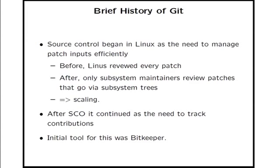Here's a brief history. Git is a fairly recent invention, and source control in Linux began effectively as the need to manage patches efficiently. If you look at the early releases of Linux from about 2.4.18 and before, it was basically Linus patching into his master kernel tree and releasing tarballs. Before that, Linus reviewed every patch that went into his master tarball, which meant that there was a huge scalability problem. If you think of the modern Linux kernel, we can merge something like 10,000 patches in one release cycle, which is every three months.